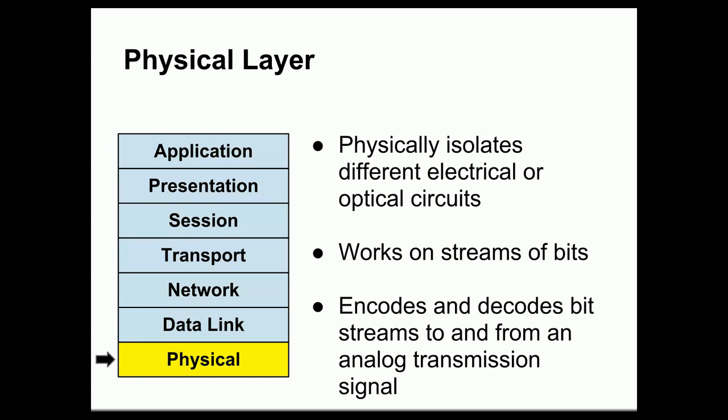An important purpose of the physical layer is to physically isolate different electrical or optical circuits from each other. Without this isolation, a malfunctioning device attached to a network could prevent the entire network from operating. The physical layer works on streams of bits and is responsible for getting groups of bits from one machine to another by encoding and decoding bit streams into an analog transmission signal. Ultimately, at a physical level, all communications are done using analog signals.